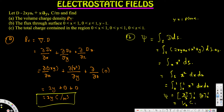For part c, we need the total charge contained in the region x: 0 to 1, y: 0 to 1, z: 0 to 1. Gauss's law states that the total electric flux Ψ through any closed surface is equal to the total charge enclosed by the surface.